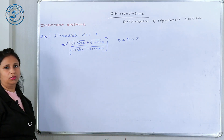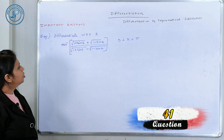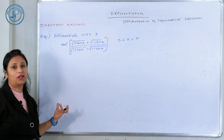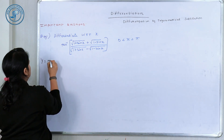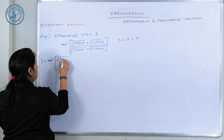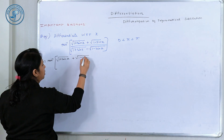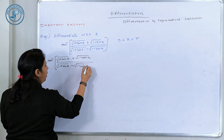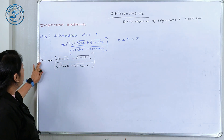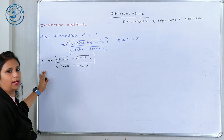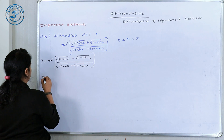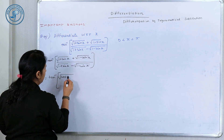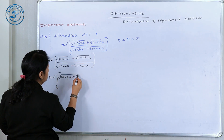Let's start the next question. Here x lies between 0 and π, so we can directly apply the magic 6 formulas. y = ... I'm rewriting the question because in the exam you need to copy it and write y = before working. Now substituting: 1 + sin x becomes (cos(x/2) + sin(x/2))².